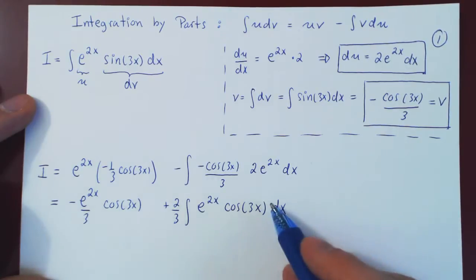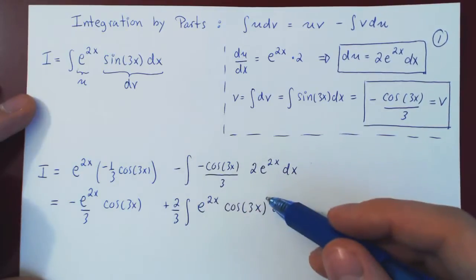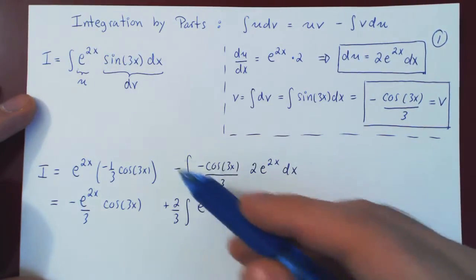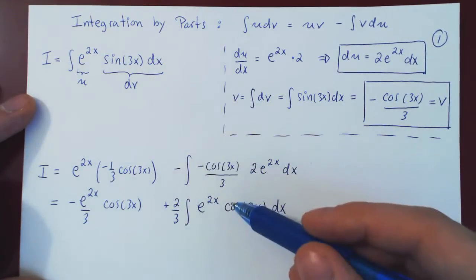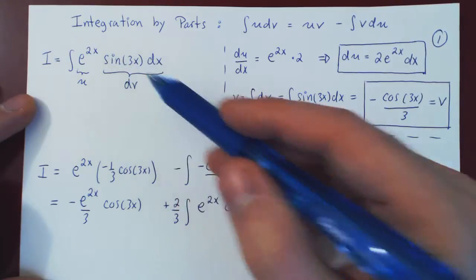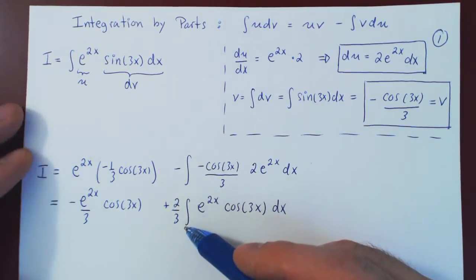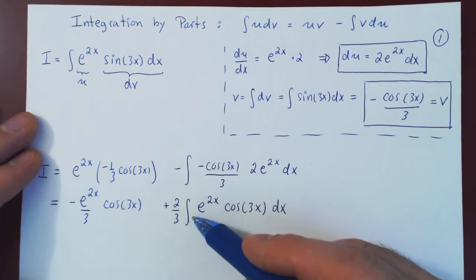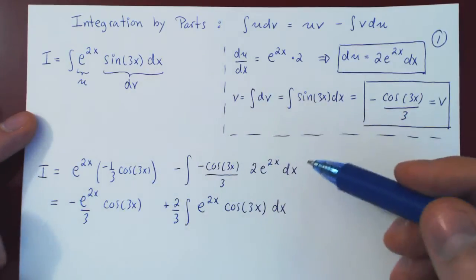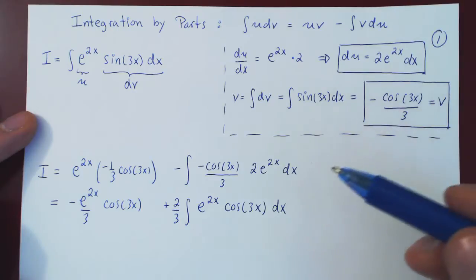Now, after applying integration by parts once, here is the new integral. Looking back at the previous integral — is this any better? The answer is no; the only difference is that sine was replaced by cosine. Sine and cosine, as far as integration goes, are basically the same. So this integral is essentially the same as the original one. It looks like we've applied by parts and gotten basically nowhere.